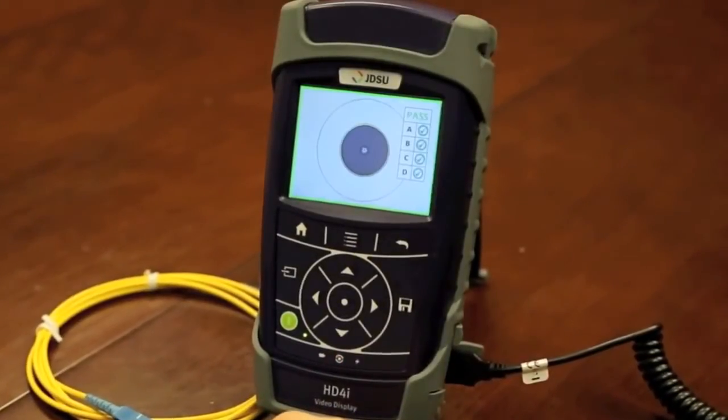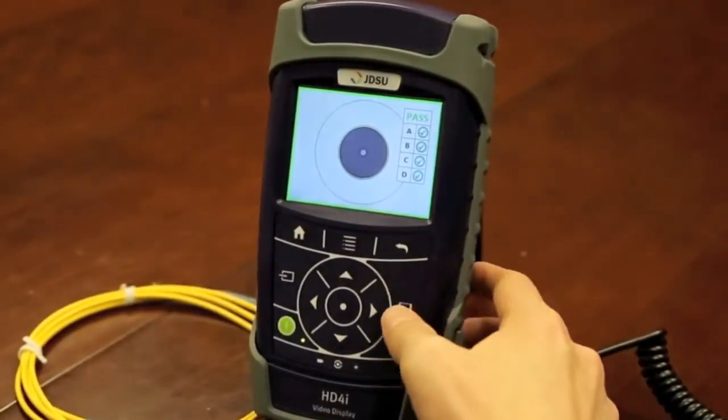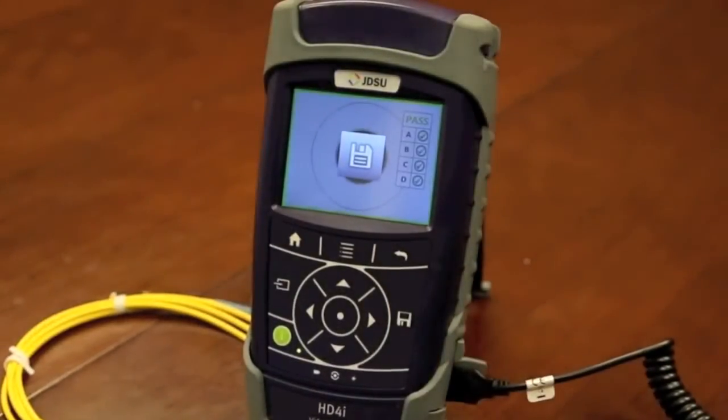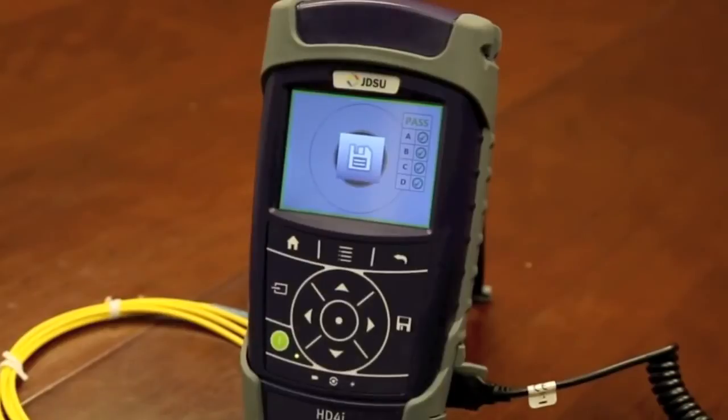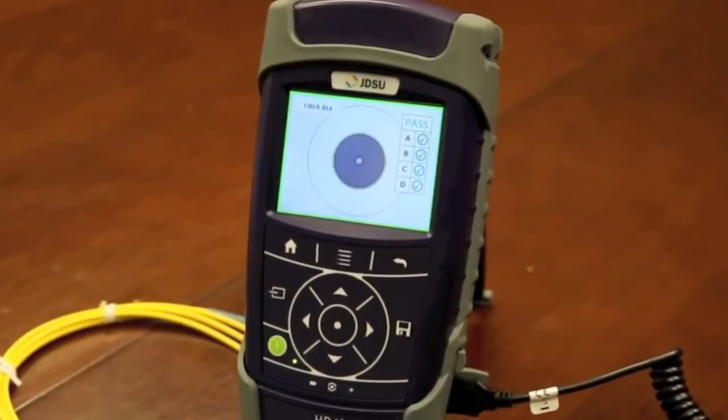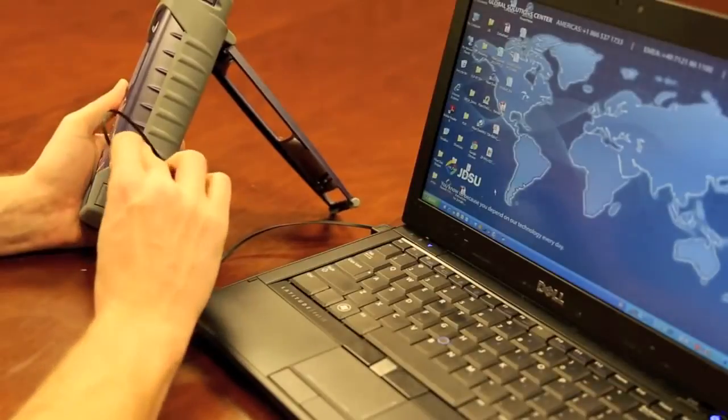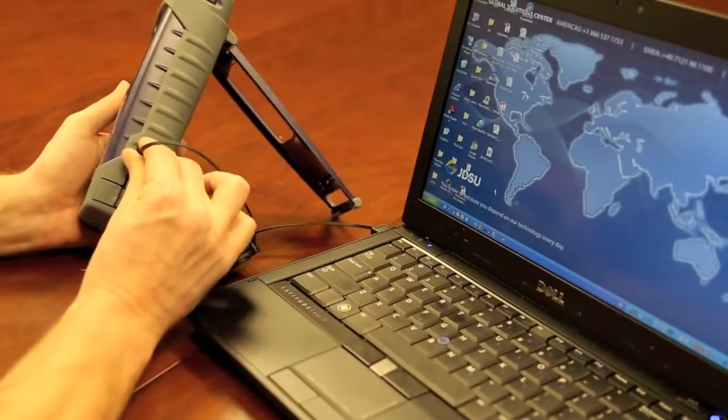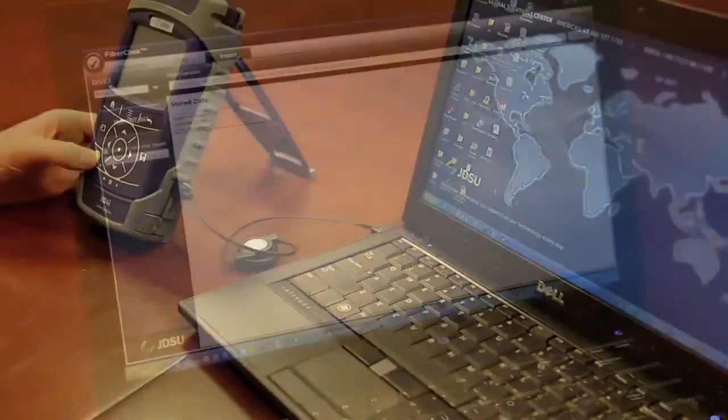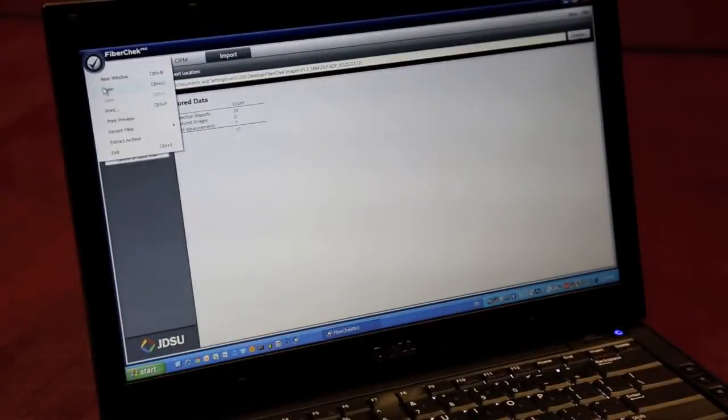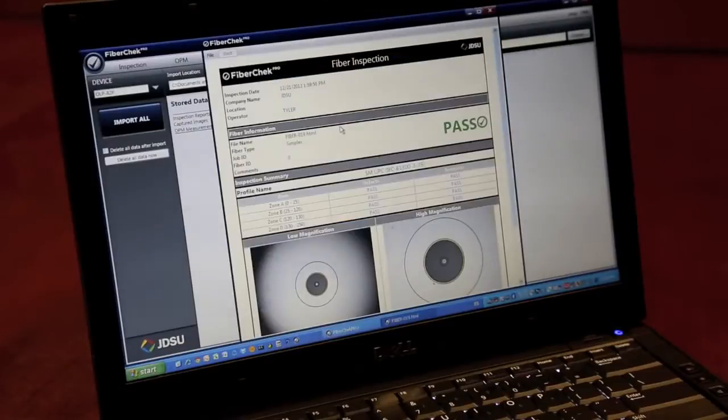If you're already familiar with our P5000i probe, you've seen this done on other JDSU test platforms or on a PC with FiberCheck Pro software. This performs the same way, but it removes the need of having to carry a laptop around with you in the field. You can save the data directly on the device and later connect it to a PC and use FiberCheck Pro to import all of your saved results and generate a certification report to provide proof on the quality of your work.